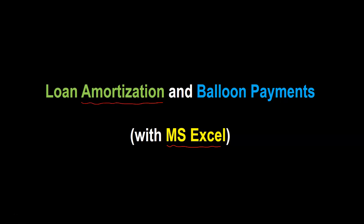Hello everyone. In this video I'm going to show you how you can use Microsoft Excel to conduct a fairly straightforward exercise in loan amortization. You might recall that loan amortization refers to how you as a borrower repay the amount that you borrowed as well as the interest owed on it. Most loans call for fixed periodic payments — maybe fixed monthly or fixed yearly payments. I'm going to show you how to determine those fixed payments using Excel, and how to construct the complete amortization schedule.